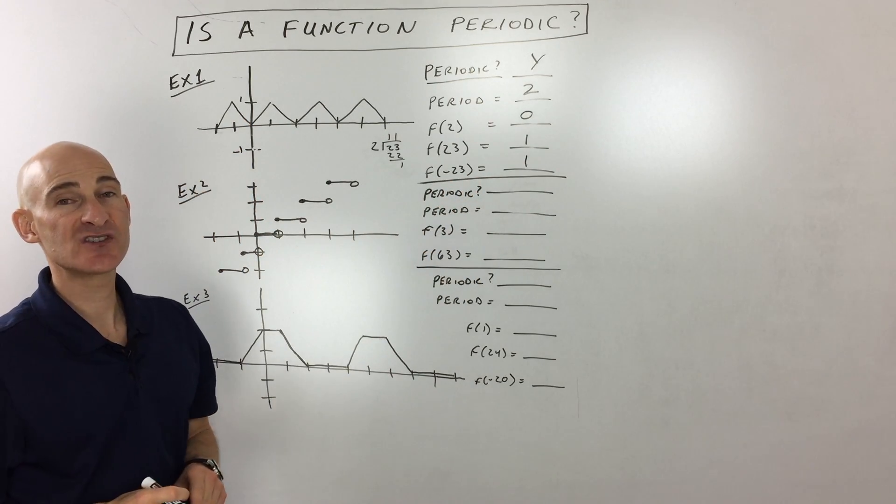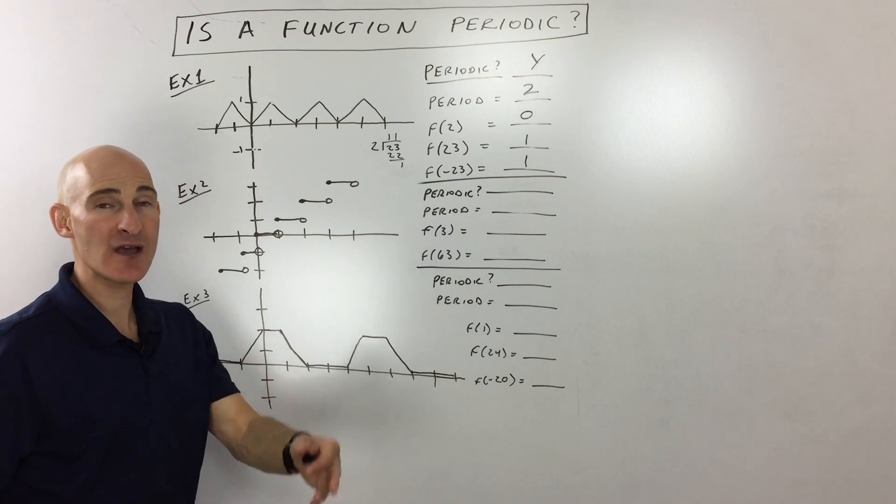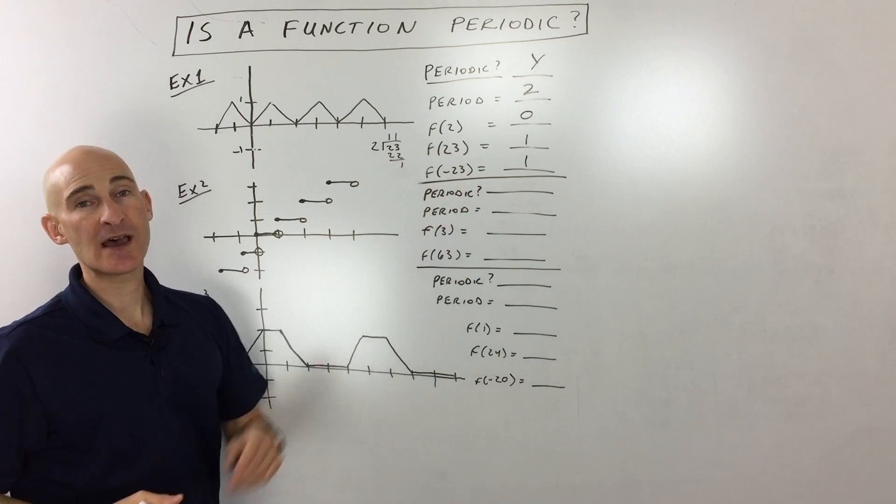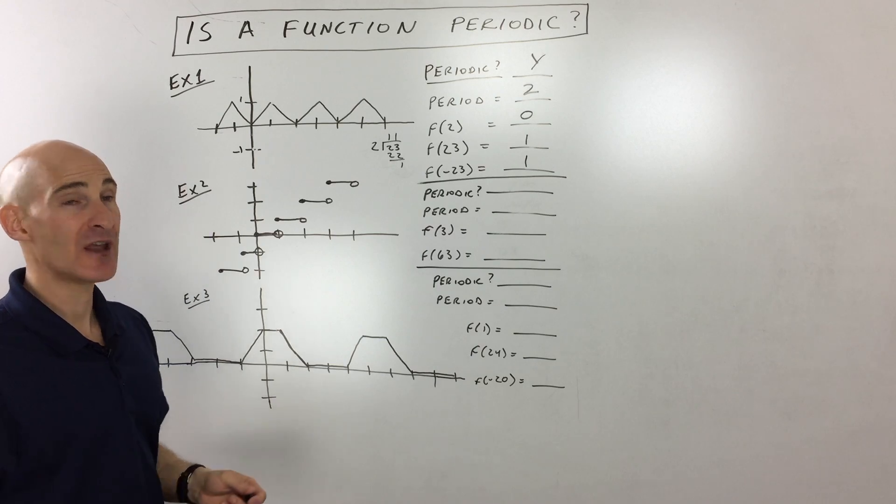So you're with me so far on that first example. We're trying to figure out, is it periodic? And what is the period? And then what's that y value, or what's that output for a given x value?